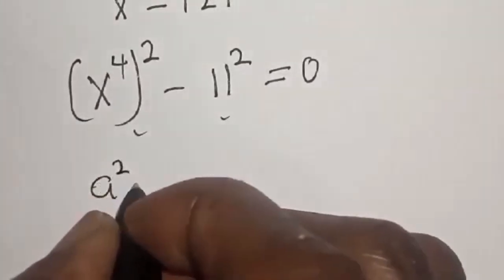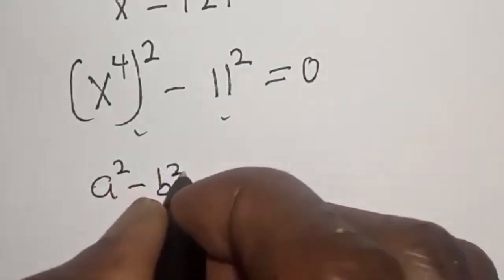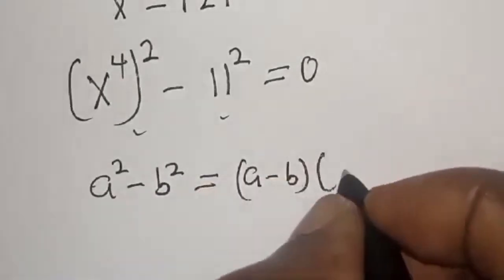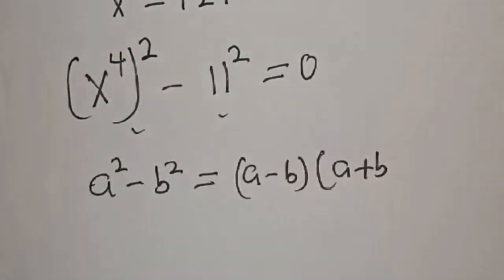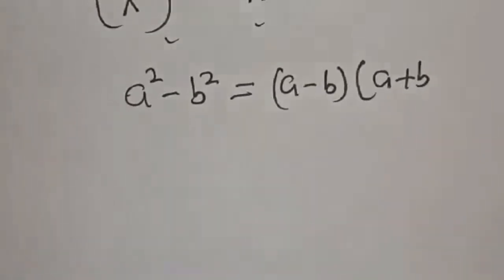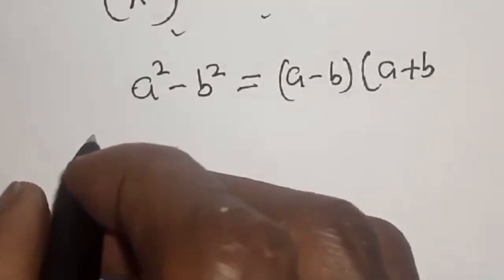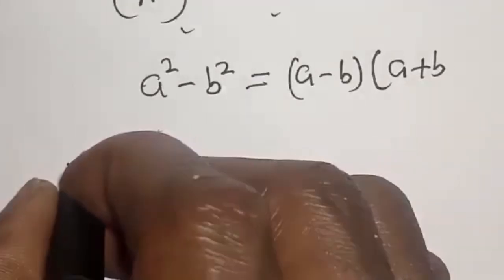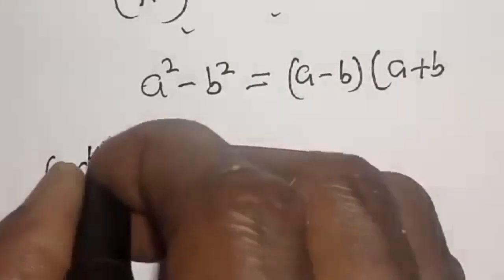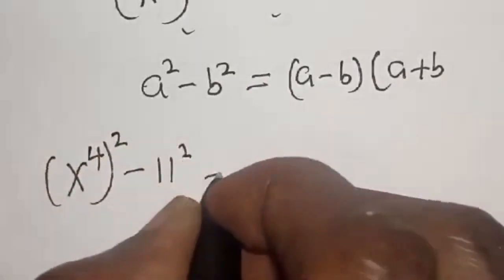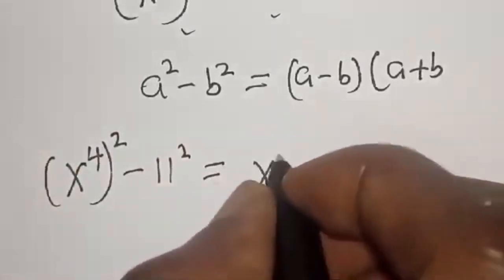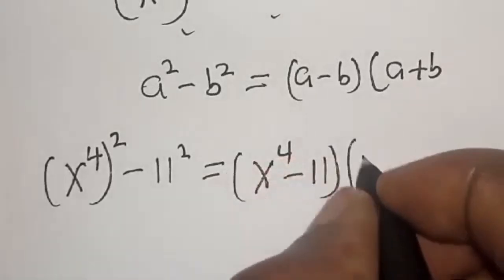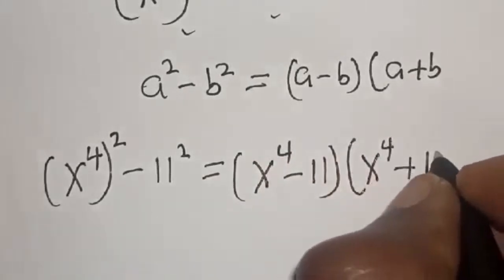A squared minus B squared is equal to A minus B multiplied by A plus B. Now we have s raised to power 4 squared minus 11 squared, which equals s raised to power 4 minus 11, multiplied by s raised to power 4 plus 11.